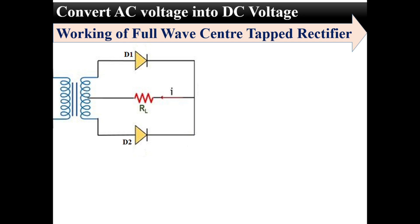The connections of two diodes are as shown in this figure. When AC supply is applied to this rectifier, for the positive half cycle, diode D1 will be forward biased and diode D2 will be reverse biased. So current will flow only through diode D1, and diode D2 will act as an open circuit. For the positive half cycle, current flows through diode D1 and load resistance, with the direction of current as shown in this figure, and the output will be as shown in this waveform.